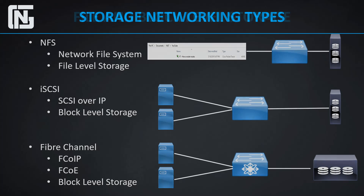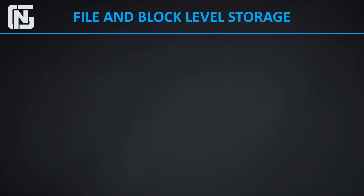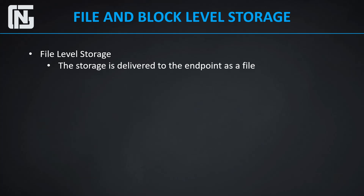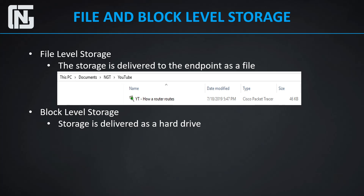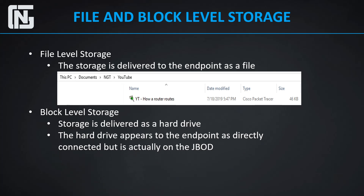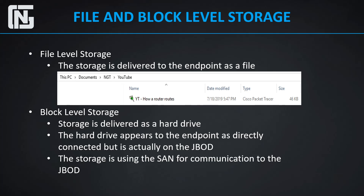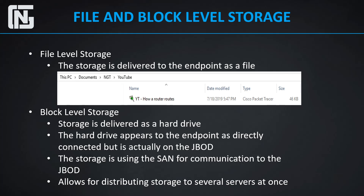Some of the big differences between file and block level storage: with file level storage, the storage is delivered to the endpoint as a file — that's NFS. With block level storage, the storage is delivered as a hard drive. The hard drive appears to the endpoint as directly connected, but it's actually on the JBOD. The storage is using the SAN for communication to the JBOD, and this allows for distributing storage to several servers at once.